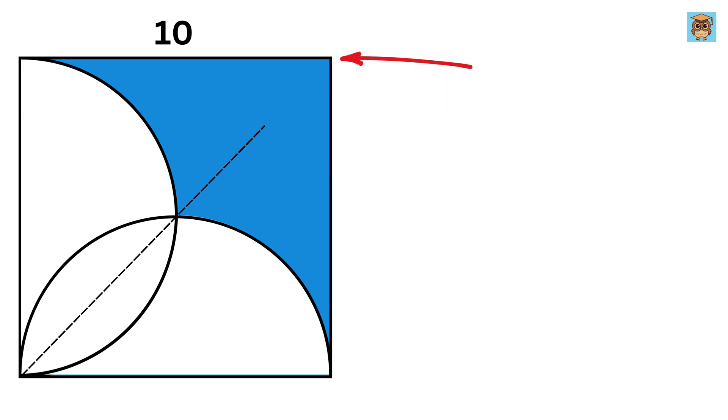We start by drawing a diagonal from this vertex of the square, passing through this intersection point, which divides everything in half. Now because of symmetry, let's say both these shapes are represented by x, these as y, and these as z.